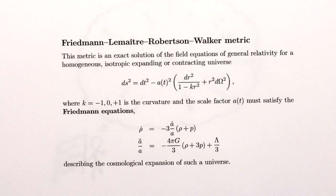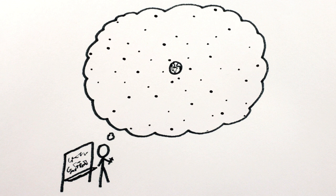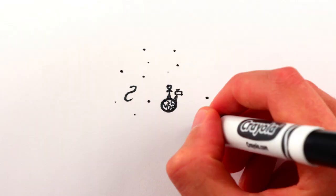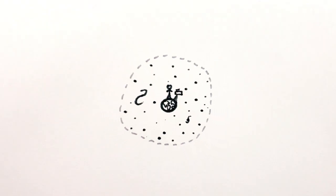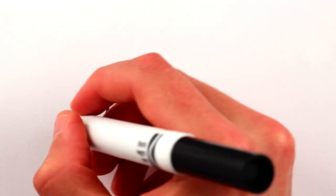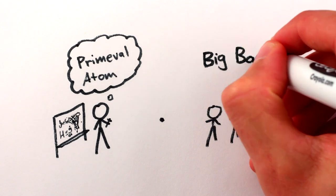This evidence, combined with the mathematics of general relativity, allowed Lemaitre to rewind cosmic history and calculate that the farther back in time you go, the smaller the universe had to be. The natural conclusion is that everything we can currently see in the universe was at one point in time, more or less at one point in space. Lemaitre called this idea the primeval atom, but of course today we know it as the Big Bang theory.